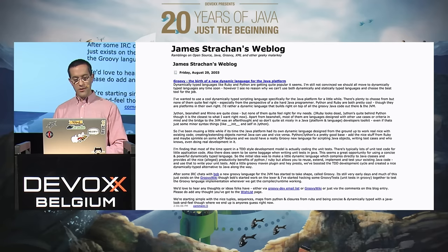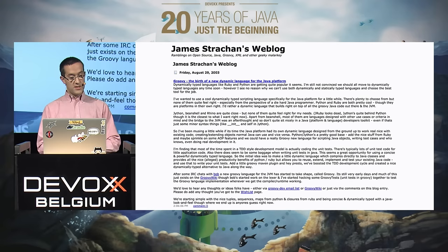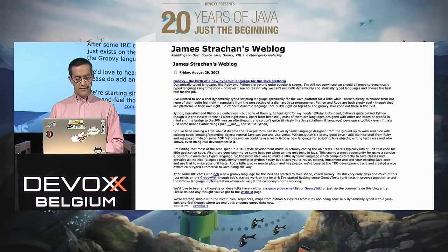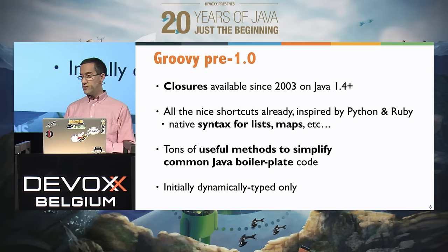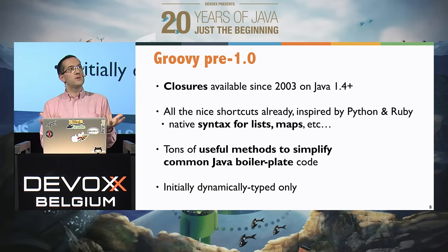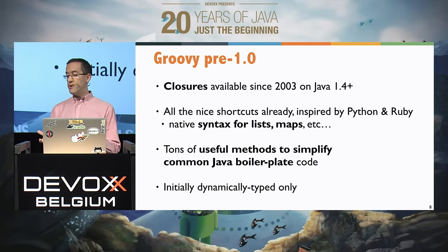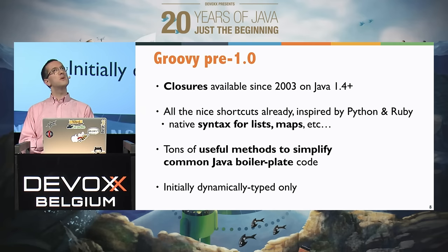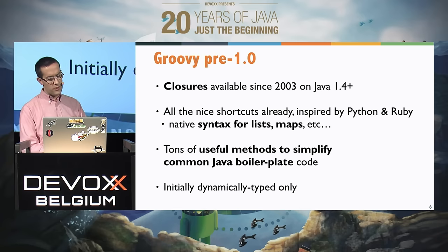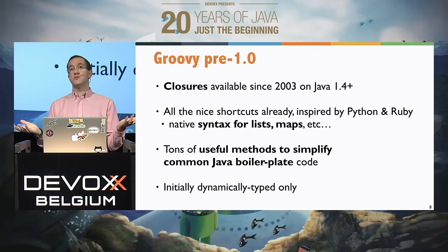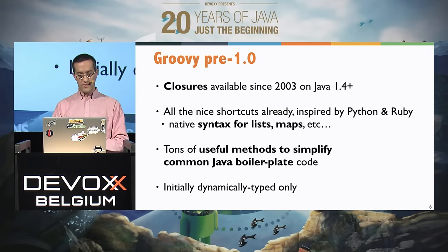In August 2003, James Strachan created Groovy and announced it on his blog. Even in that pre-1.0 release, Groovy was already pretty much looking like what it looks like now. In 2003, we already had closures, and it was working on Java 1.4. We had closures more than 10 years ago on the JVM — that was nice.